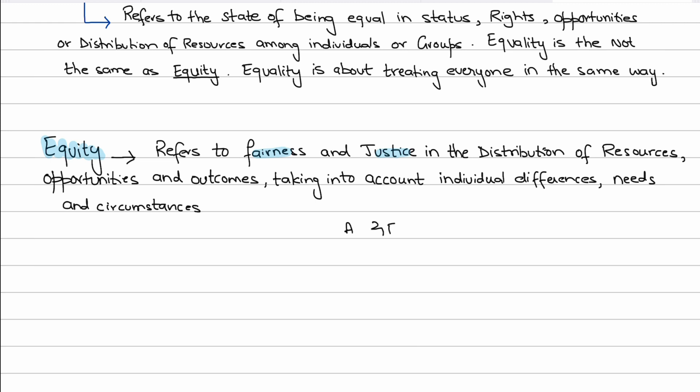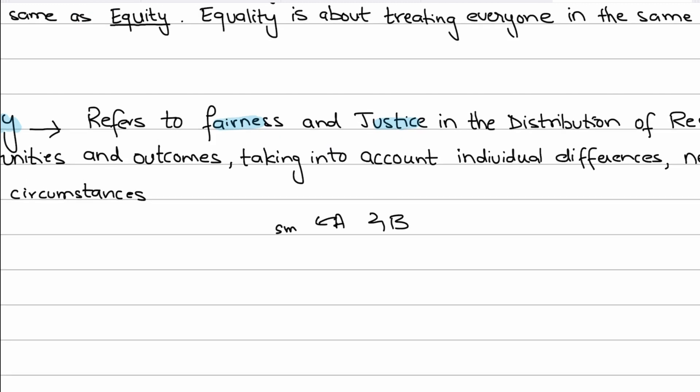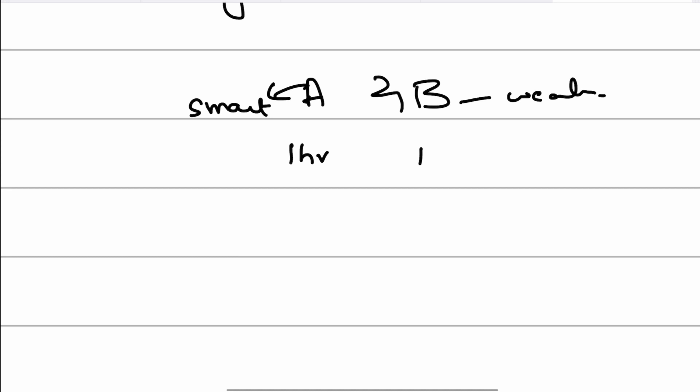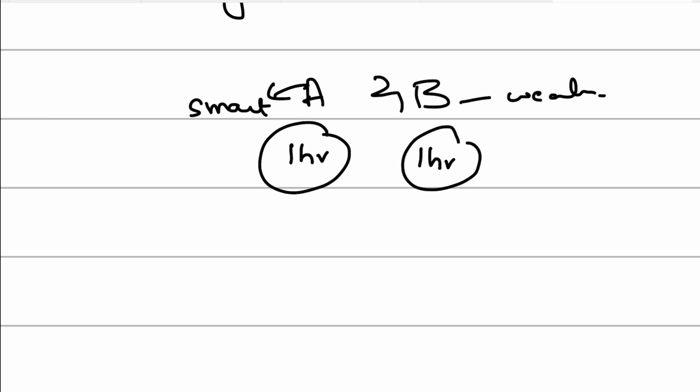For example, say I have two students, A and B. A is a smart student and B is a weak student. If I give one hour to A and one hour to B, that is equality — equal treatment. But B is a weak student; his individual needs are different. He needs more time to understand, process, and learn things. So I should give him perhaps one and a half or two hours according to his individual needs.